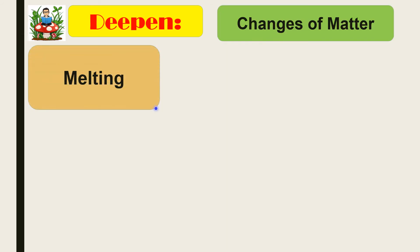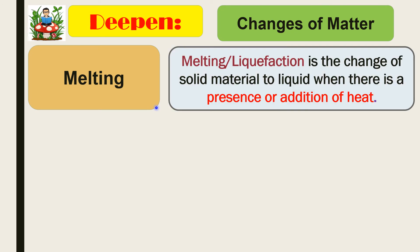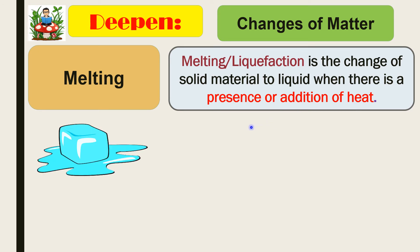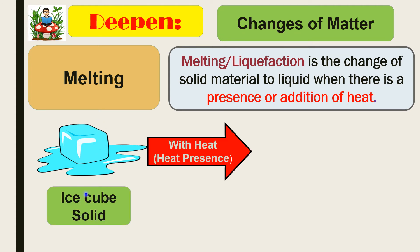Change in matter — the first process is melting. Melting, also called liquefaction, is the change of solid material to liquid when there is the presence or addition of heat. For example, ice cubes, which are solid, with the presence of heat, will turn into water or liquid.